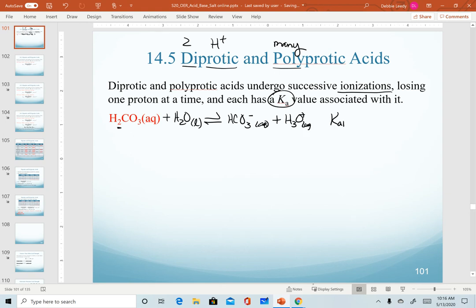So this has a Ka value that we label as Ka1. We're removing the first proton, and it doesn't technically matter which one in the structure. We're just removing the first one, and this would have our expression of products over reactants.